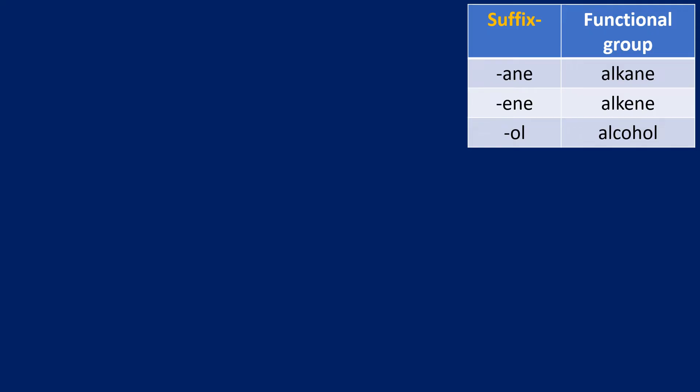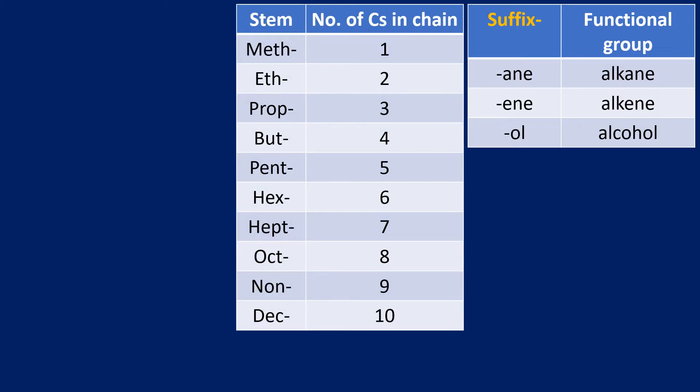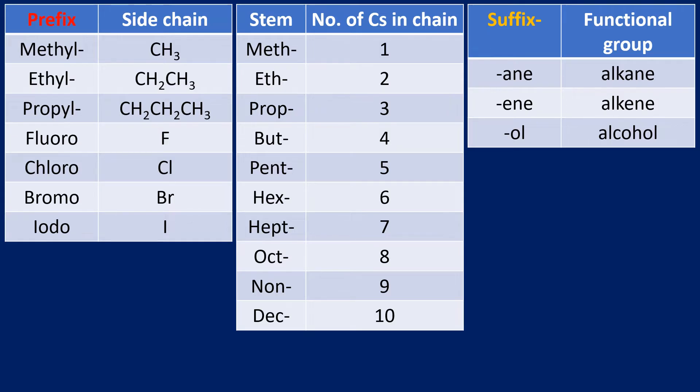We have the stem, which is the longest carbon chain, and those are the stem parts of the name. Then we also have a prefix in some cases that identifies any side chains, or we also use the prefix for haloalkanes.